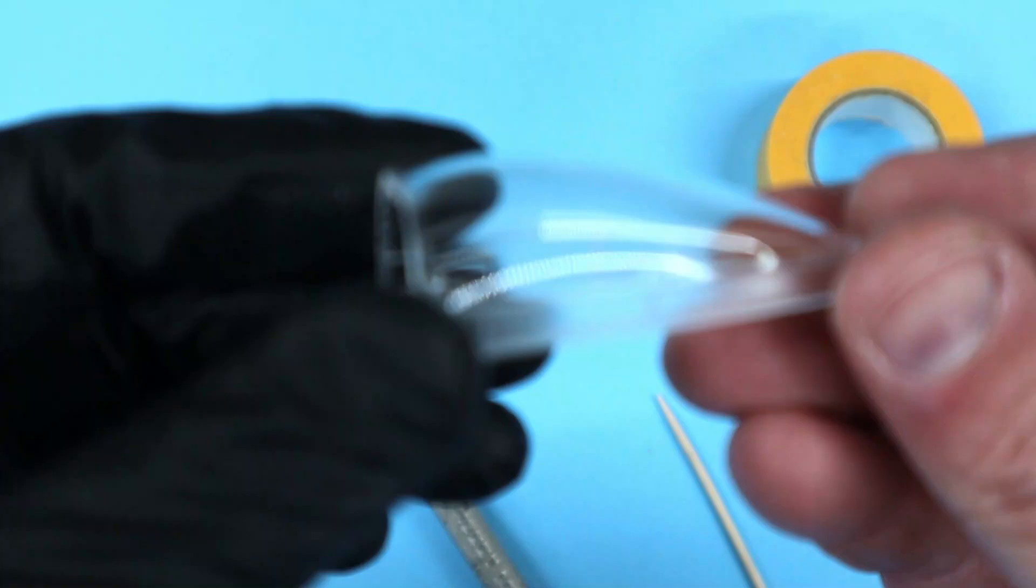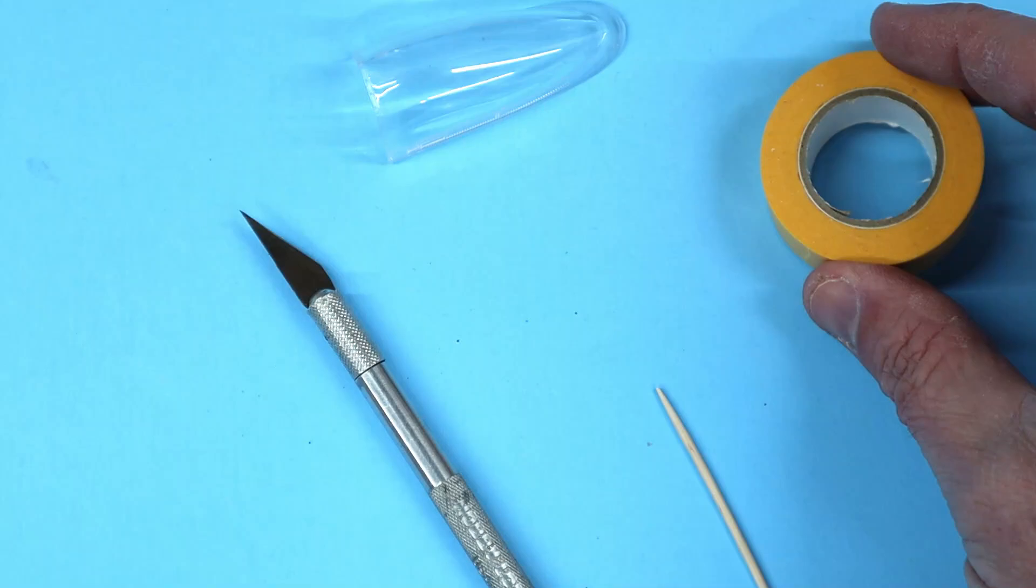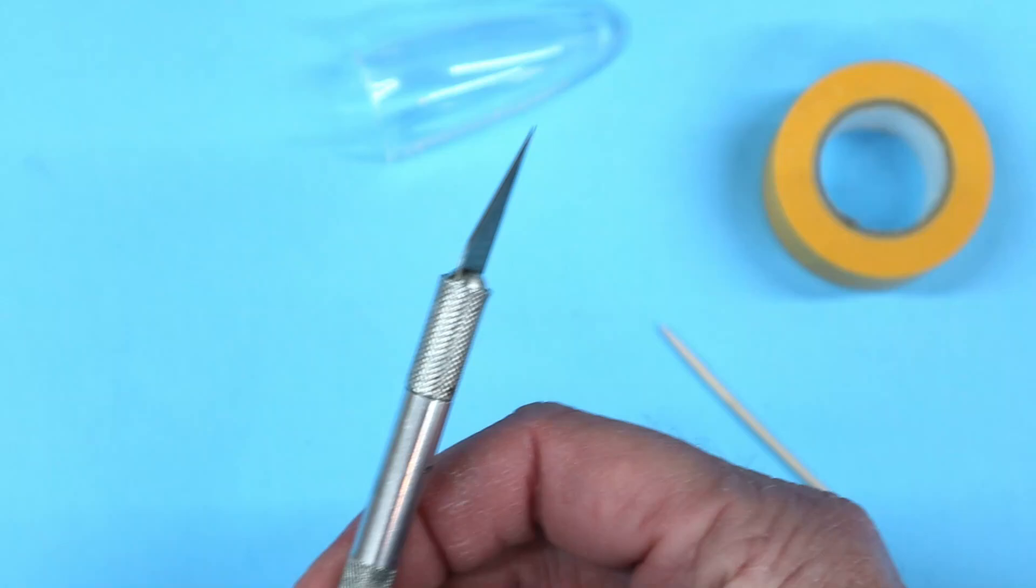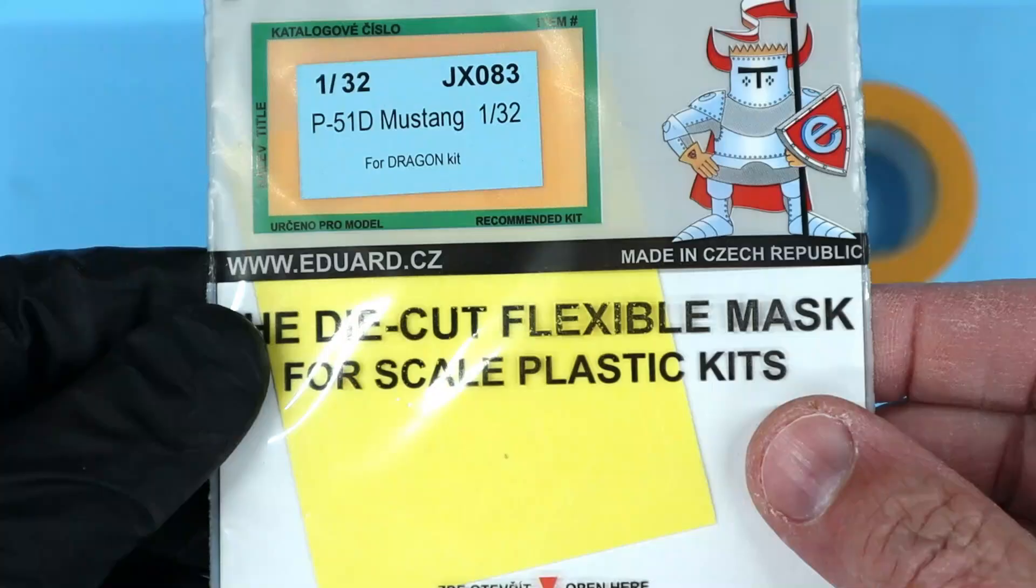Here are the tools and materials you'll need. The canopy of course, some Tamiya low tack tape, a toothpick, and an exacto knife.